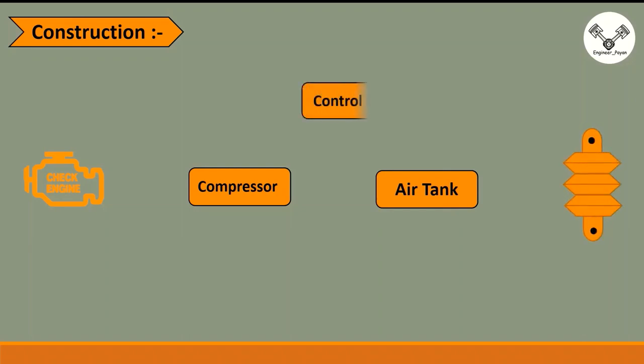Next is the construction. Engine, compressor, air tank, suspension. As you can see, we have a suspension. Next is the control unit. The control unit has a height sensor. So here is the height sensor that sends control unit signals.